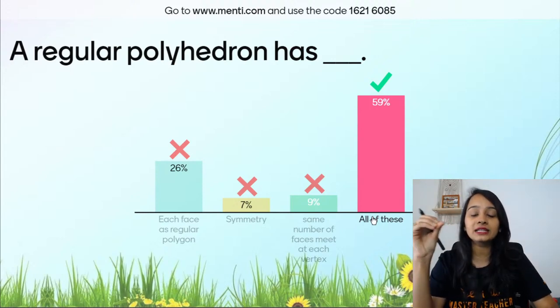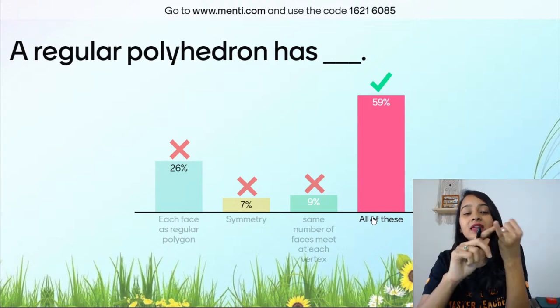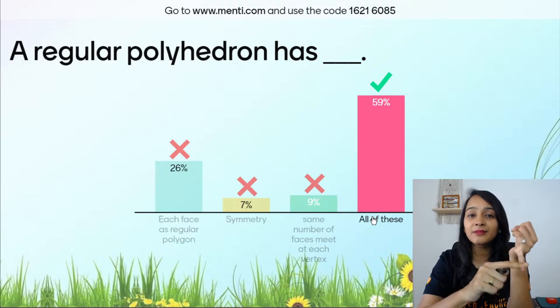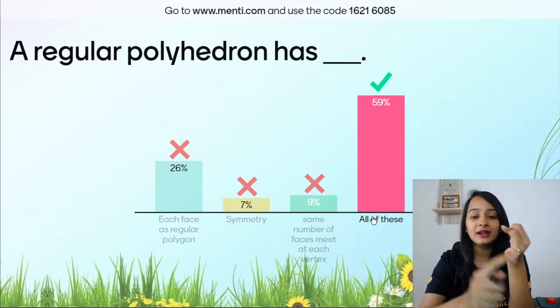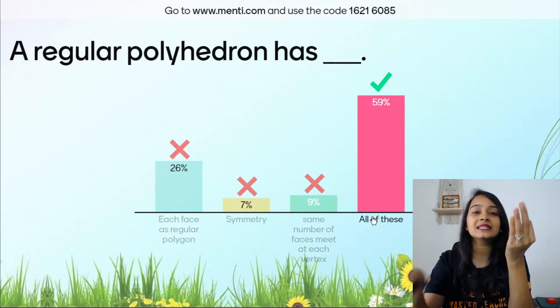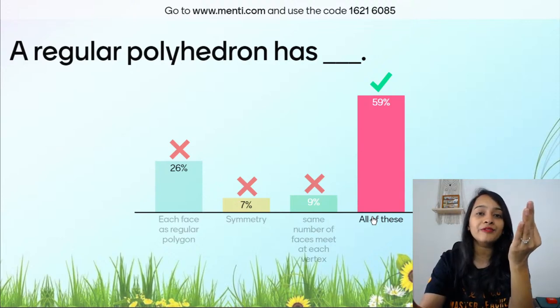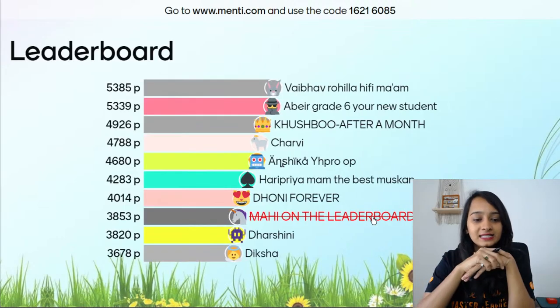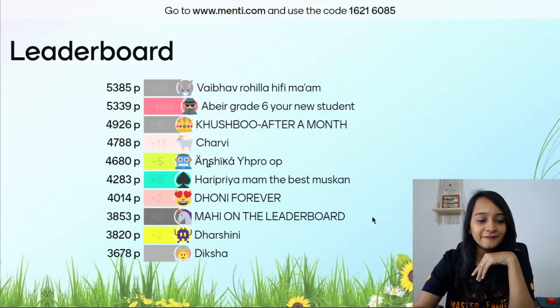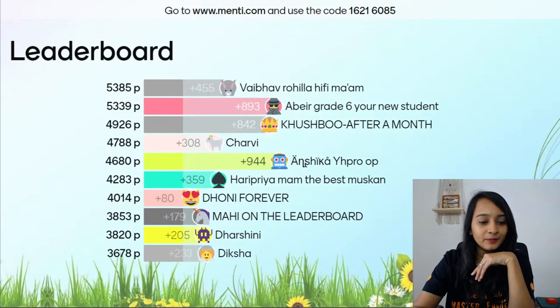Question 7: A regular polyhedron has — (a) each face is a regular polygon, (b) symmetry, (c) same number of faces meet at each vertex, (d) all of the above. The answer is all of the above! A regular polyhedron has faces made up of regular polygons, has symmetry, and the same number of faces meet at every vertex.